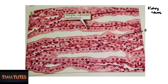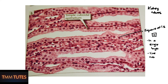Let's start with simple cuboidal epithelium. Here we've got kidney tubules — these are square cells with a central nucleus, and they line in a single layer, usually around tubules or lumens, forming a wall.